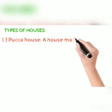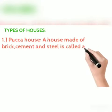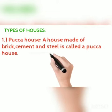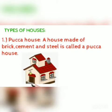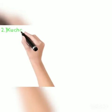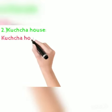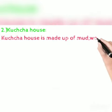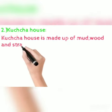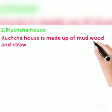The first type is a pukka house. A house made up of brick, cement, and steel is called a pukka house. It is mostly found in cities. The next type is a kacha house. A kacha house is made up of straw, mud, and wood, and is mostly found in villages.